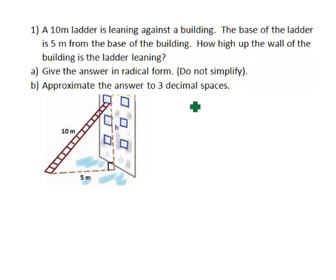A 10 meter ladder is leaning against a building. I have included a picture so we can get a better visual representation of what this question is stating. The base of the ladder is 5 meters from the base of the building. How high up the wall of the building is the ladder leaning? We're trying to calculate the height where the ladder is leaning against the building.